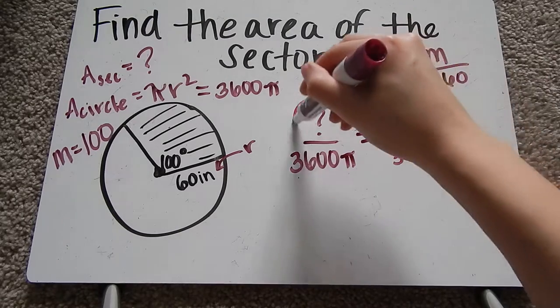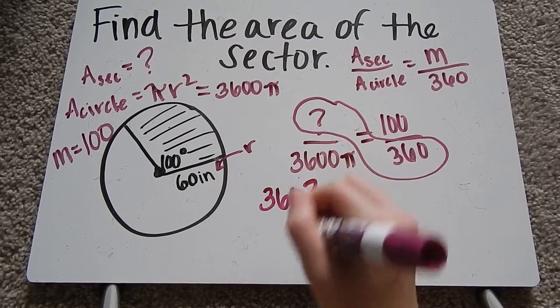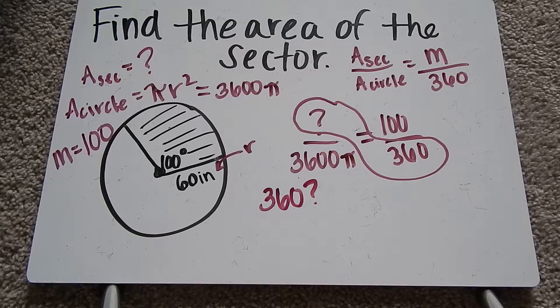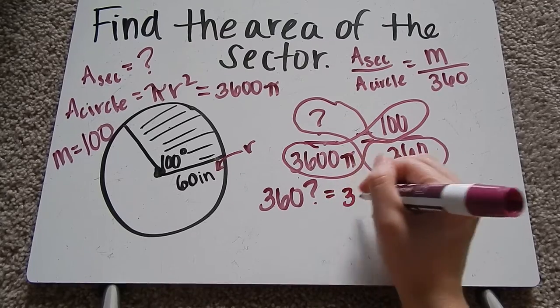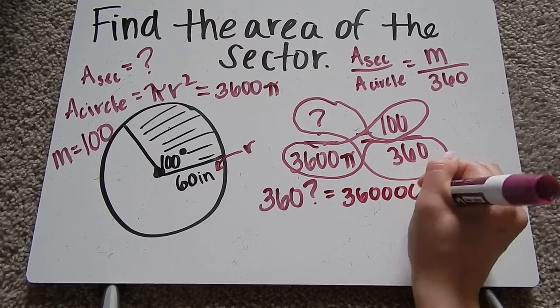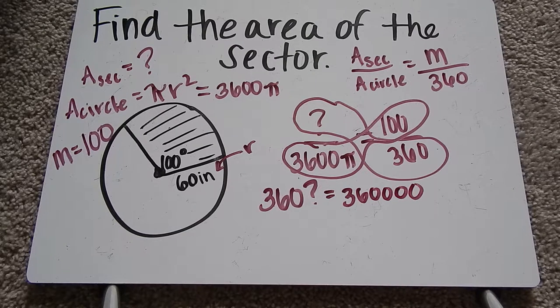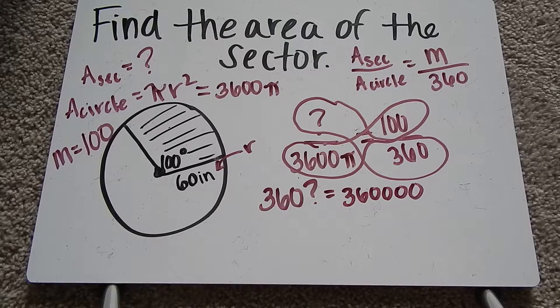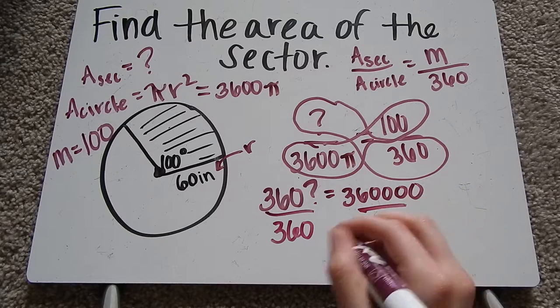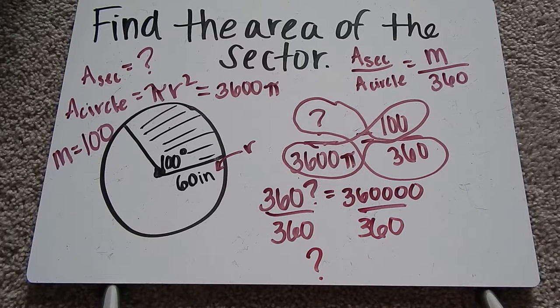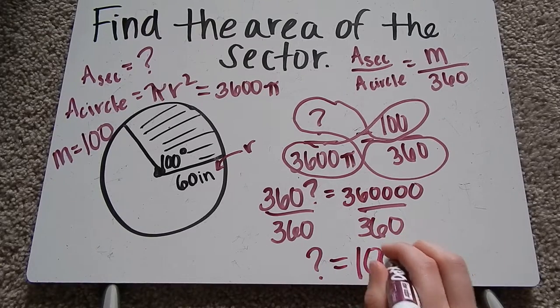Now here's where we cross multiply. So I have 360 times my question mark. My question mark I'm just using like a variable, it's like an x. Then I have 3600 times 100. It's going to be 360,000. And divide both sides by 360. And I get my area of the sector is equal to 1,000.